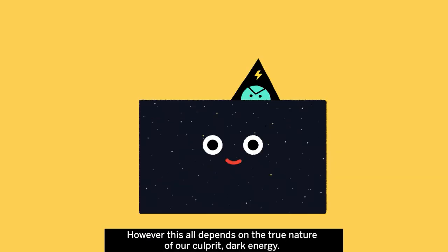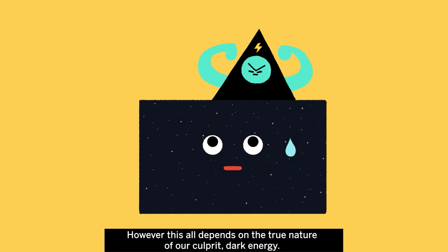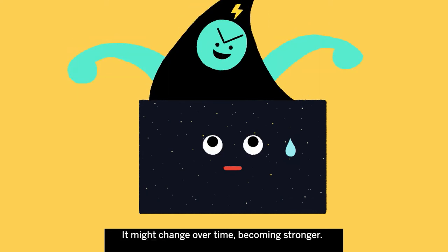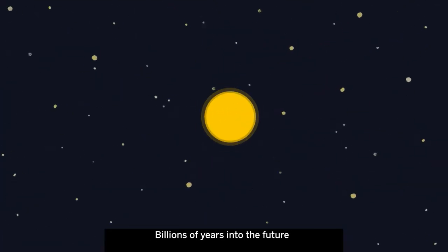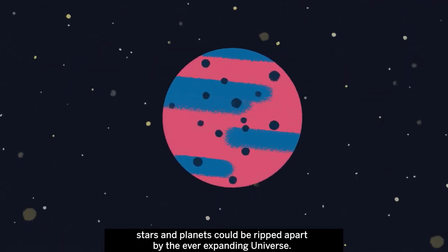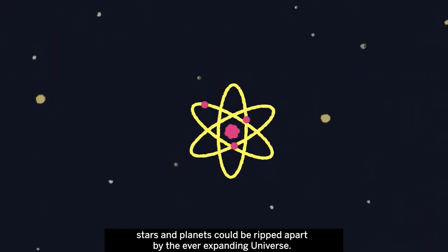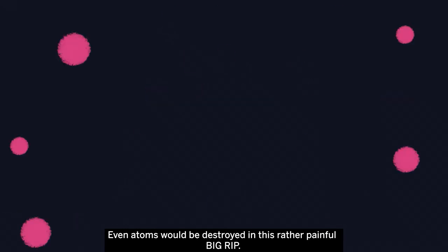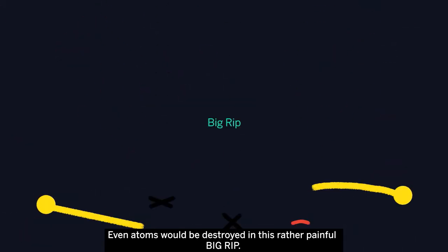However, this all depends on the true nature of our culprit, dark energy. It might change over time, becoming stronger. Billions of years into the future, stars and planets could be ripped apart by the ever-expanding universe. Even atoms would be destroyed in this rather painful big rip.